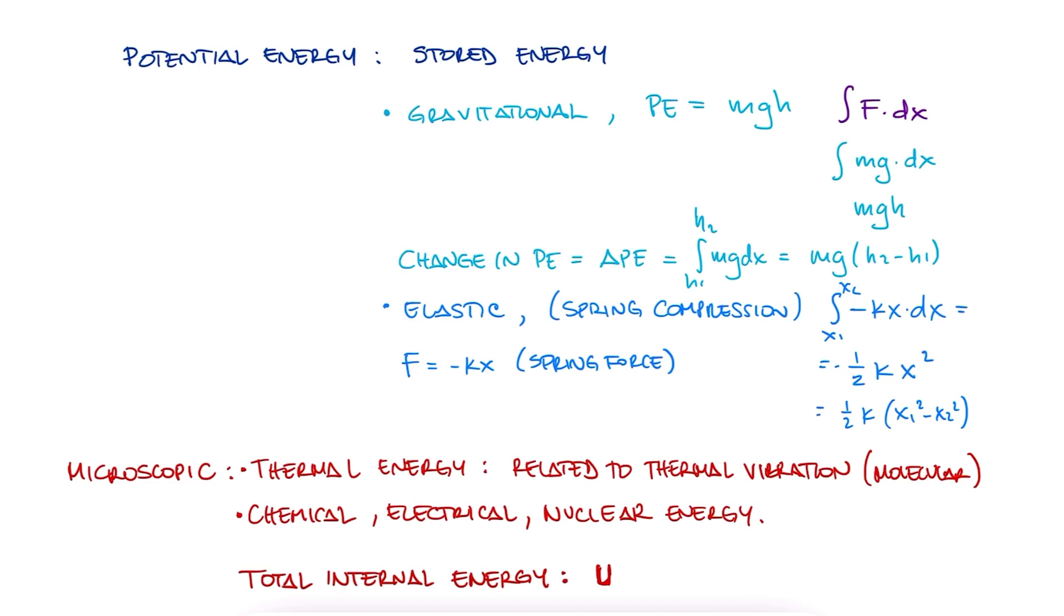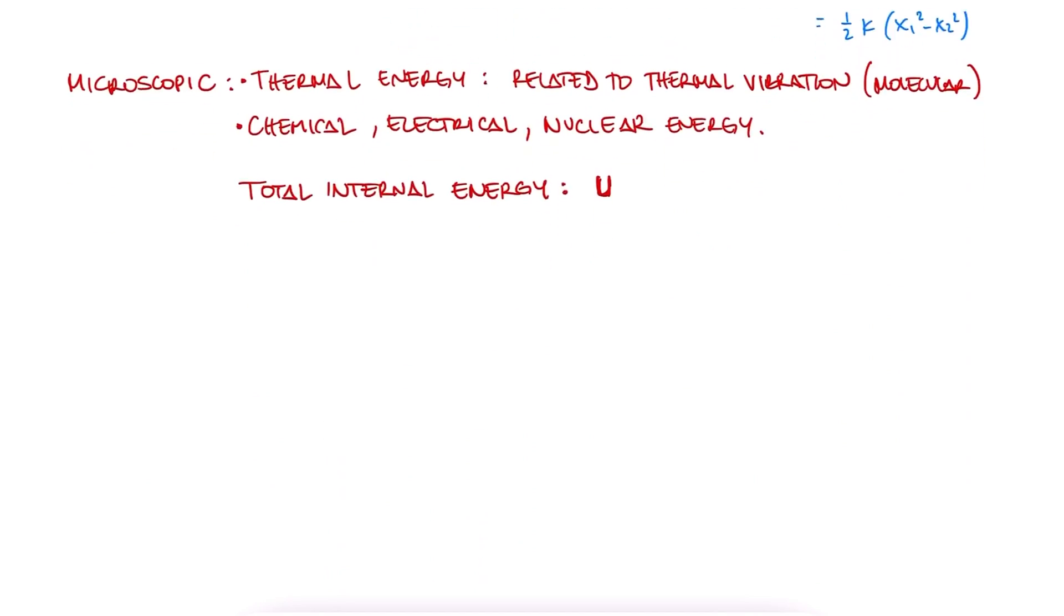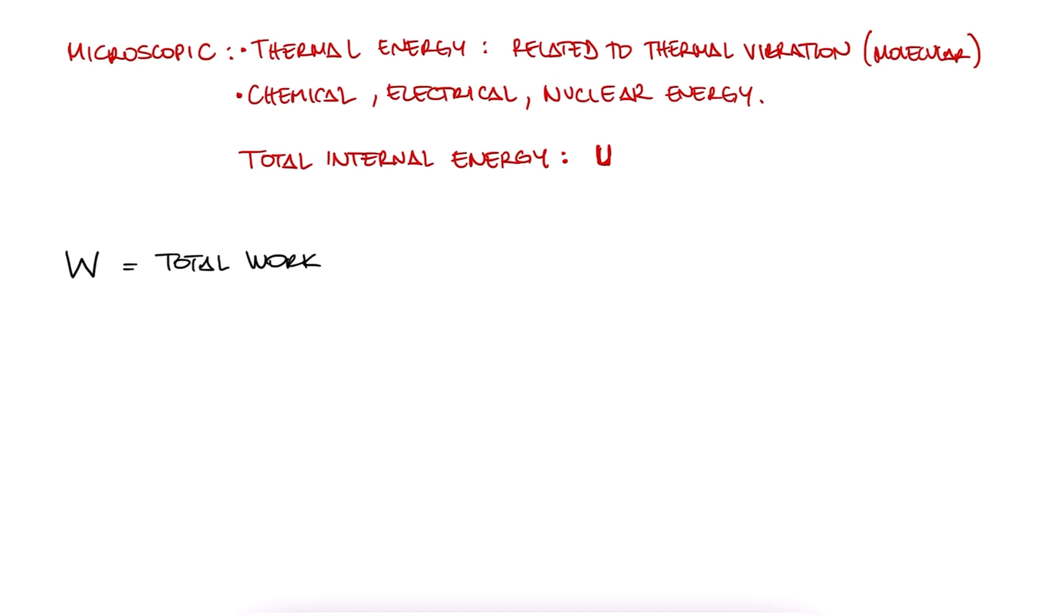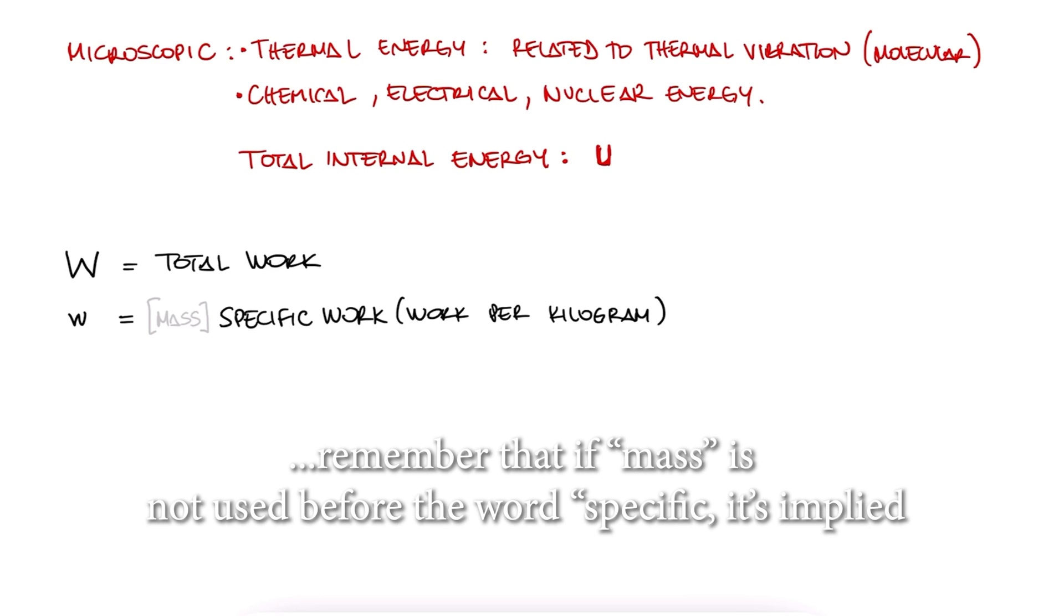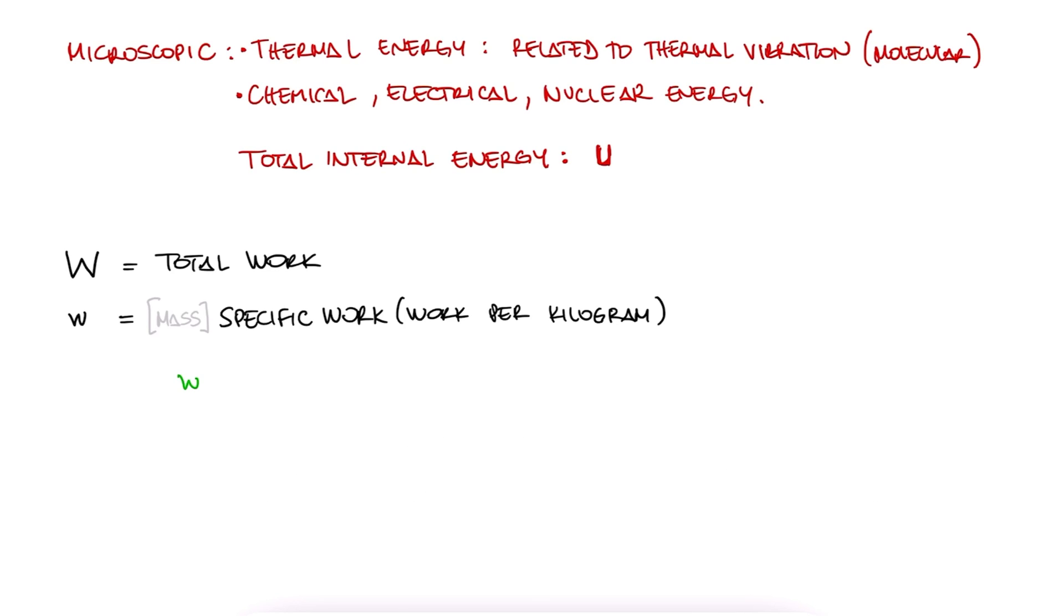Remember how we established that we use lowercase letters for the variables of specific properties or properties per unit mass? It's the same here. We can write capital W for total work, or lowercase w for work per kilogram, or mass-specific work. Lowercase w for kinetic energy would be ½v², and lowercase w for gravitational potential energy would be gh, both expressions without the mass term.